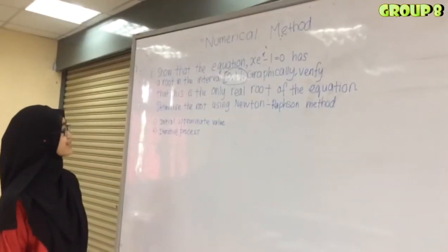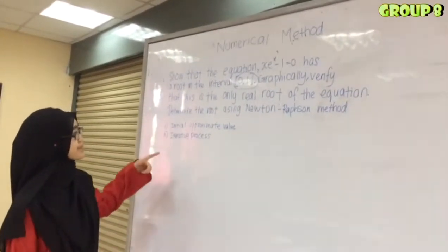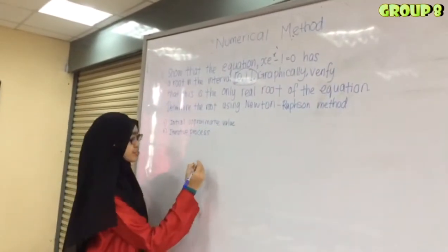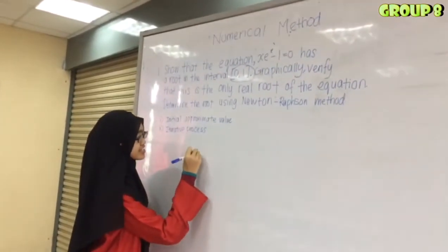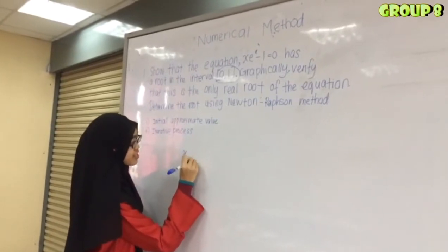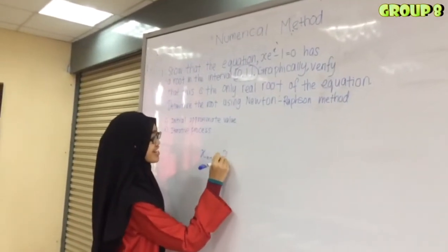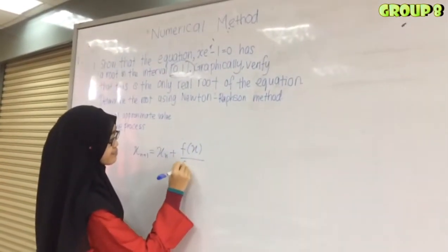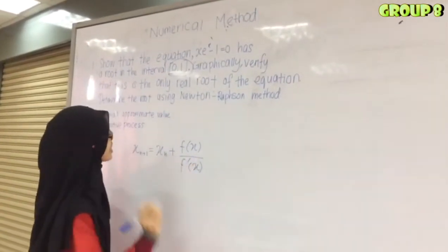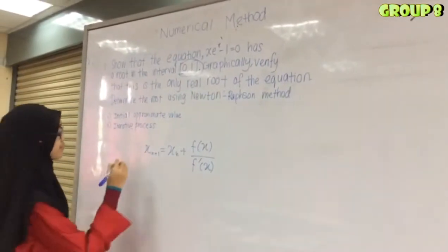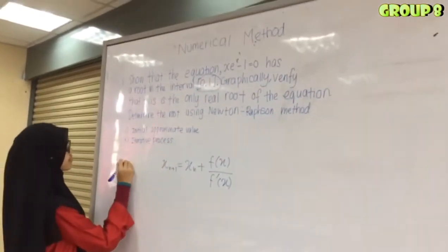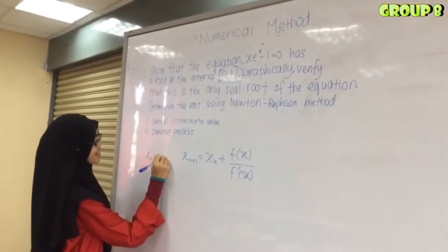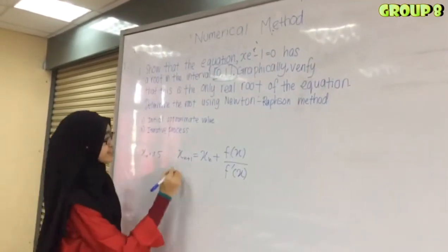Now I'm going to solve the second part: determine the root using the Newton-Raphson method. The general formula is x_(n+1) = x_n minus f(x_n) over f'(x_n). Since our initial approximate value x₀ is 0.5, we begin the iteration from there.